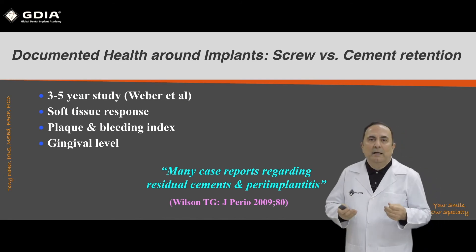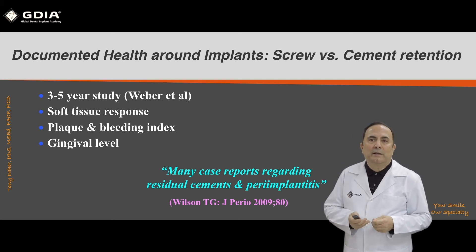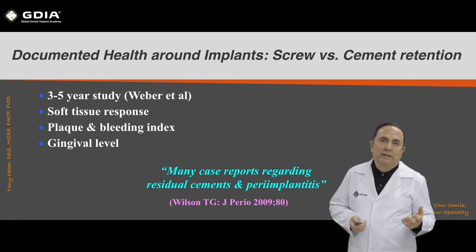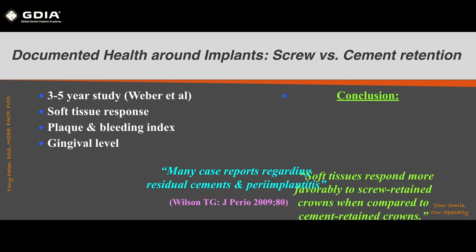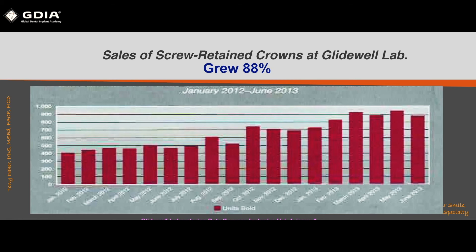Dr. Wadhwani and Dr. Wilson, in their different articles, investigated which is better: screw retained or cement retained restorations. The conclusion of the study is that soft tissue responds more favorably to screw retained crowns when compared to cement retained restorations. A survey from an international lab in Southern California, Glidewell Lab, also found that sales of screw retained crowns grew more than 88%.